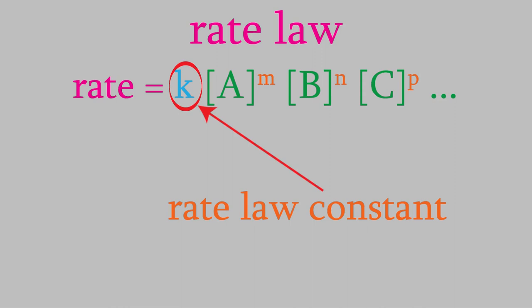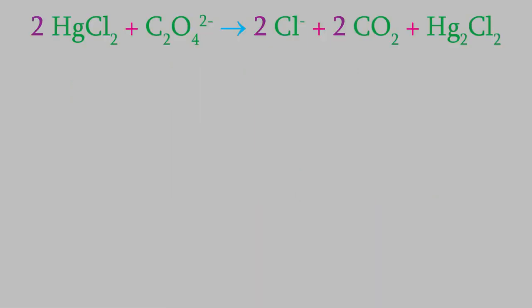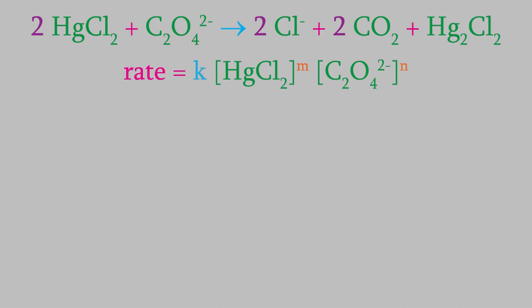Let's try an example using a real chemical reaction instead of a generic one. Suppose we combine mercury chloride and an oxalate ion, which produces chloride ion, carbon dioxide, and mercury chloride. Let's figure out the rate law for this reaction. We can start out by writing as much of the rate law as we can so far. Remember, a rate law always has the same basic format: rate equals K times the concentration of each reactant, each raised to a different exponent. In this example, our reactants are mercury chloride and oxalate. The main thing we need to do is to determine the exponents, and in order to do that, we need data.